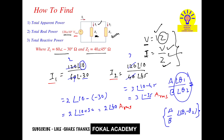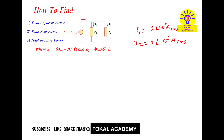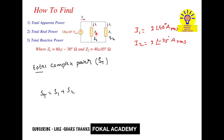Now that we have I1 and I2, we need to find total apparent power, total real power, and total reactive power. Before finding these three parameters, we first find the total complex power, because from the total complex power we can easily find all three. The total complex power ST equals S1 plus S2, where S1 is the complex power in Z1 and S2 is the complex power in Z2.